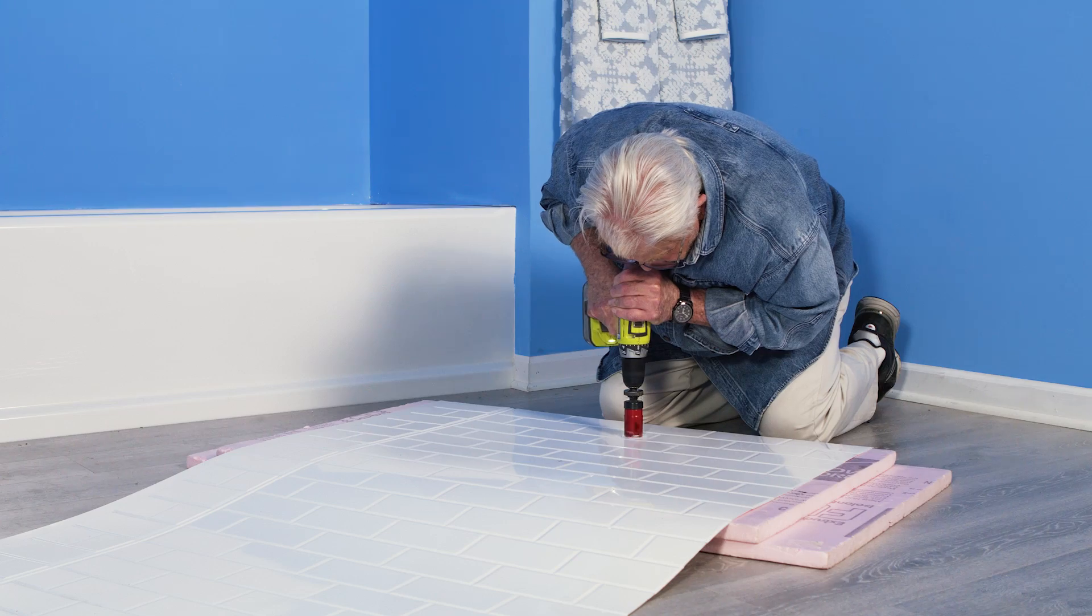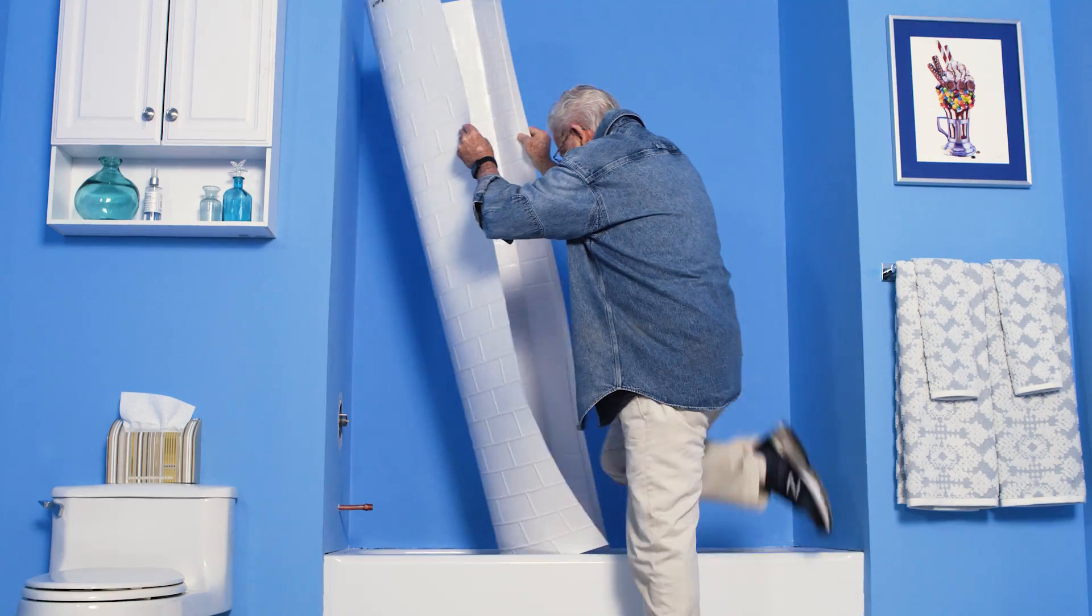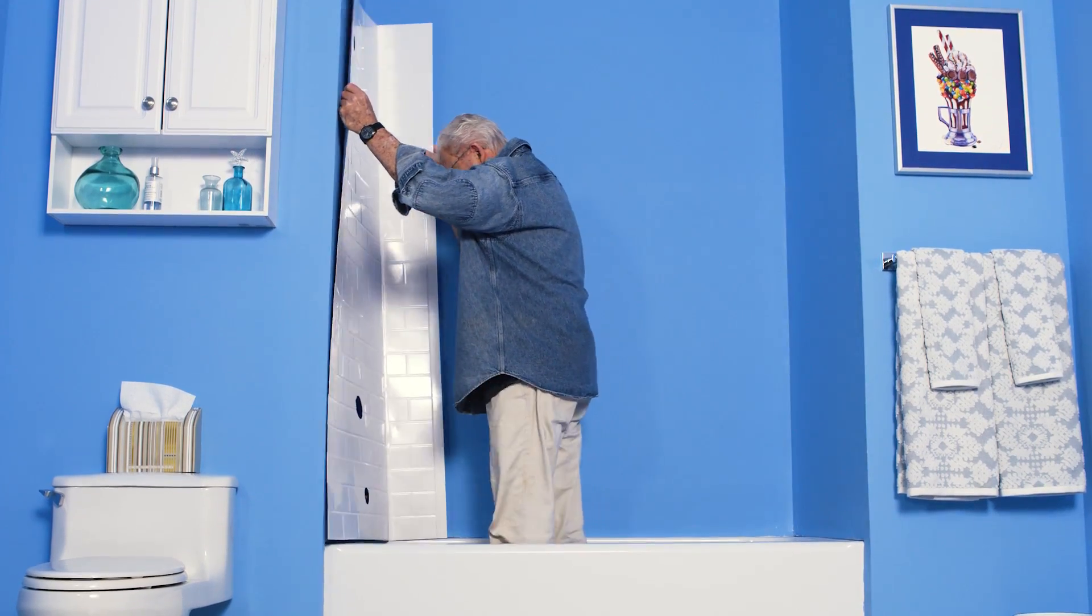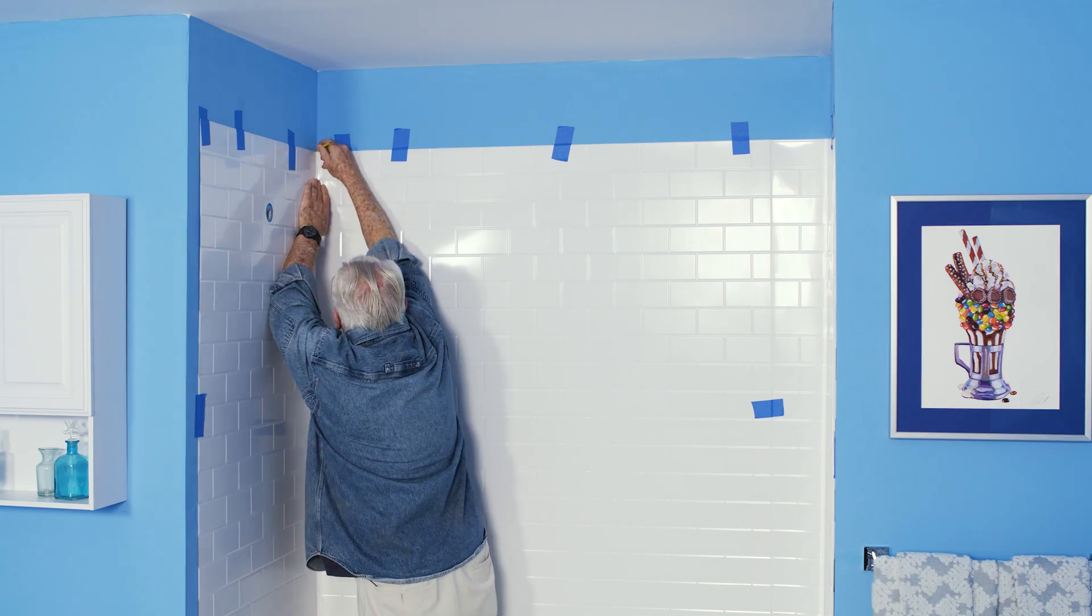Using a hole saw, I bore holes for the fixture. I do a test fit to make sure that everything aligns properly. I draw a pencil line around the top and side edges.